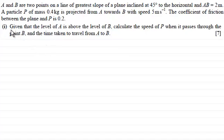And what we've got to do in the first part is, given that the level of A is above the level of B, calculate the speed of P when it passes through the point B and the time taken to travel from A to B. So if you'd like to have a go at this and haven't done so already, just give you a moment to pause the video, do come back when ready and you can check your work solution against mine.